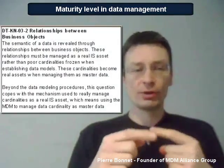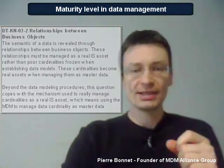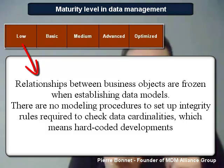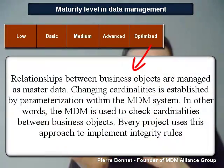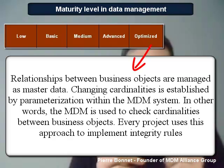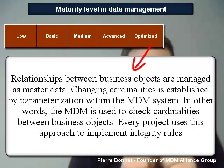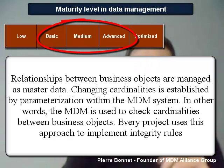Let's take a second example applied to the question of assessing how relationships between business objects are modeled. The low level is indicated as follows: relationships between business objects are frozen when establishing data models, and there are no modeling procedures to set up integrity rules required to check data cardinality — meaning hard-coded developments. On the opposite of the scale, the optimized level is: relationships between business objects are managed as mastered data, changing cardinalities is established by parametrization within the MDM system, the MDM is used to check cardinalities between business objects, and every project uses this approach to implement integrity rules. The other levels — basic, medium, and advanced — are also detailed.